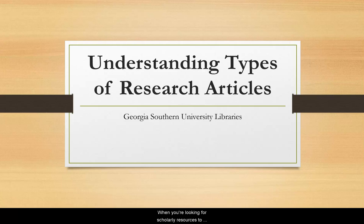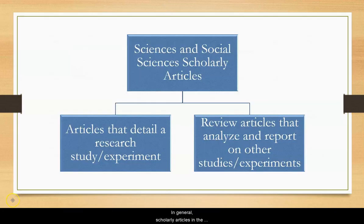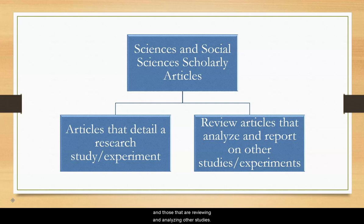When you're looking for scholarly resources to support your research paper, you should also think about how research articles can present information differently within disciplines as well as between different disciplines. In general, scholarly articles in the sciences and social sciences consist of those that are conducting a study or experiment and those that are reviewing and analyzing other studies.